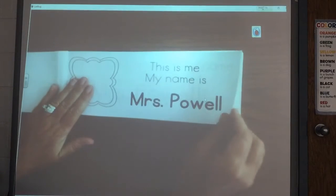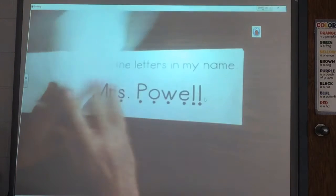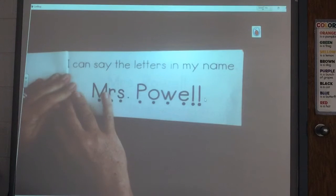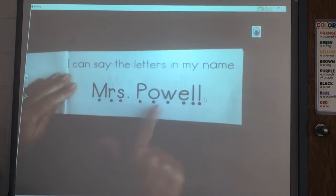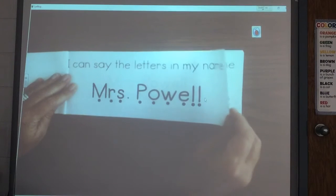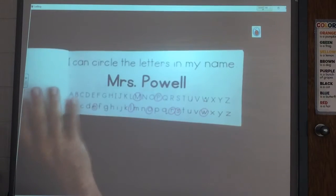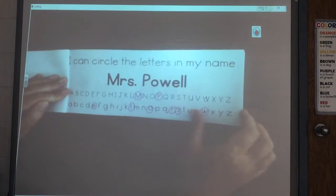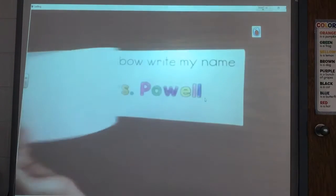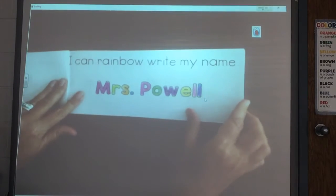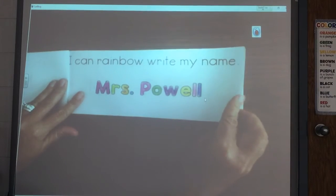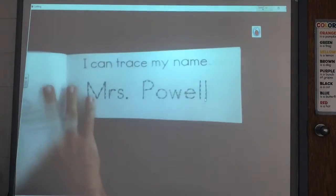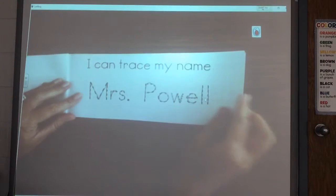Then we looked at our name and you drew a picture of yourself. I can say the letters in my name. We named each letter. You can keep practicing that. Then we circled the letters in our name. We did rainbow writing on our name, a different color for each letter. Then we traced our name.